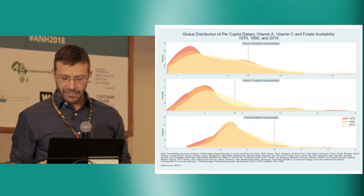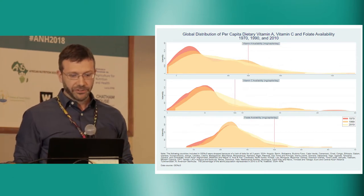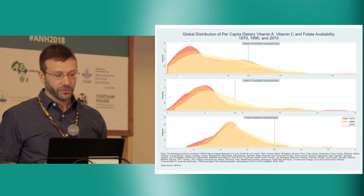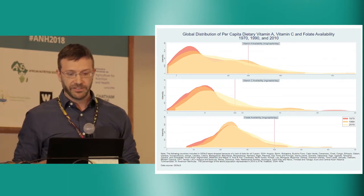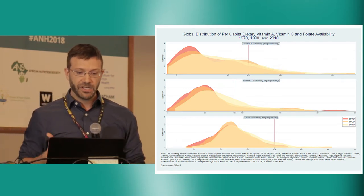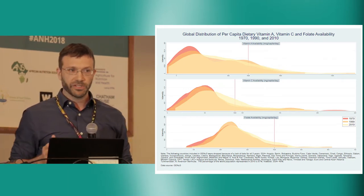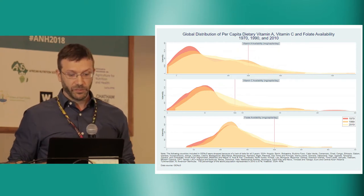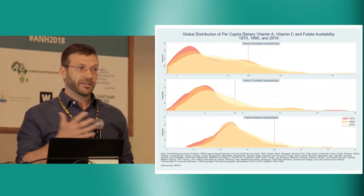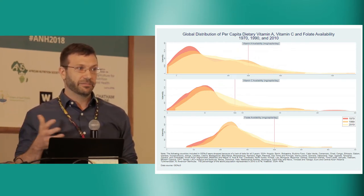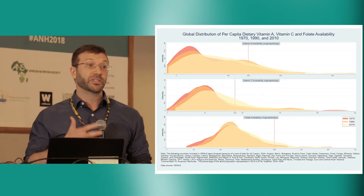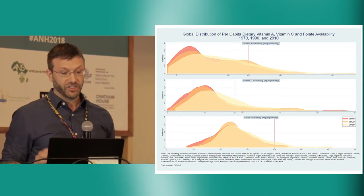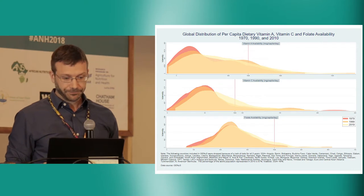When we look at other micronutrients — dietary vitamin A, vitamin C, and folate — we see similar shifts in the distribution. This is important because what we appear to be witnessing is that mean per capita nutrient availability does appear to be shifting greater over time.